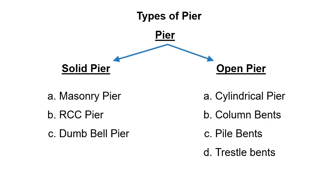The types of solid piers are: Masonry Pier, RCC Pier (Reinforced Cement Concrete Pier), and Dumbbell Pier. The types of open piers are: Cylindrical Pier, Column Bends, Pile Bends, and Trestle Bends.